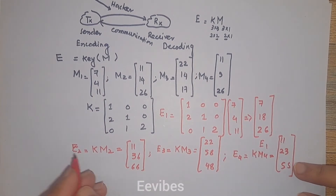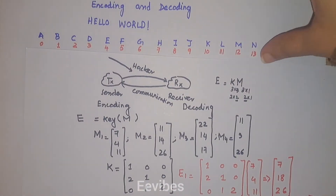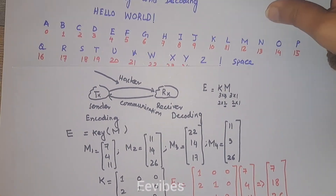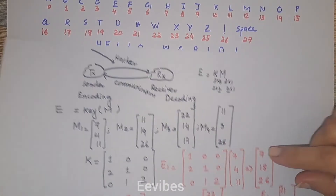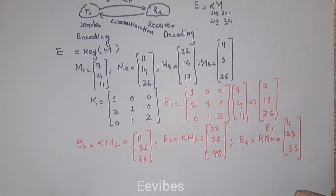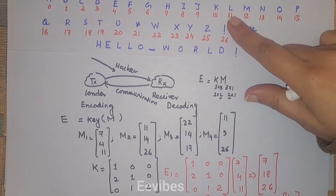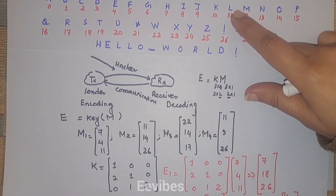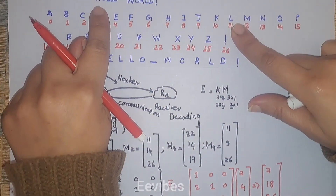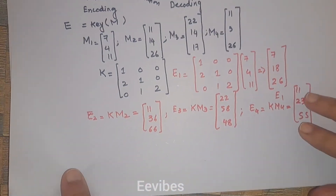Looking at the encoded values, the hacker can only see the encrypted numbers. For example, the value 66 makes no sense, and the first value 11 corresponds to the letter 'l', while the original first character was 'h'. In this way, our information is actually hidden from the hacker.